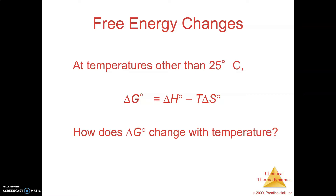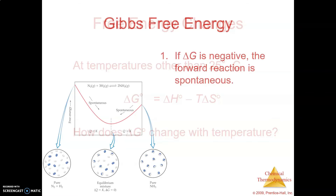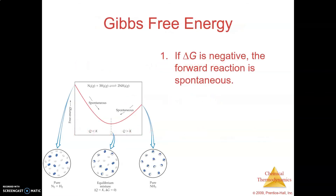Remember that when entropy, delta S, is positive, for a spontaneous process, the entropy of the universe increases. So when delta S is positive for the universe, that's spontaneous. But then delta G being negative is also spontaneous. When we look at Gibbs free energy, if delta G is negative, the forward reaction is spontaneous — meaning the forward process will occur without any outside intervention.